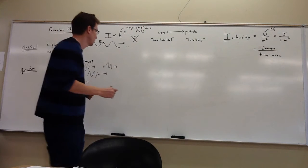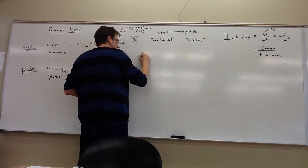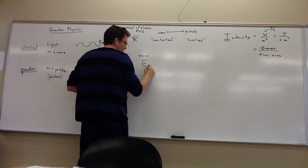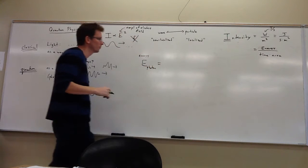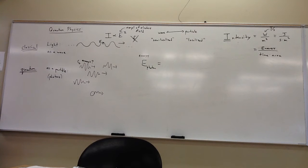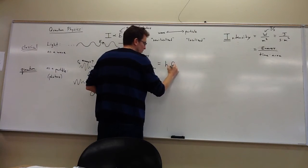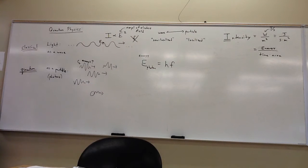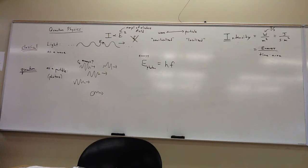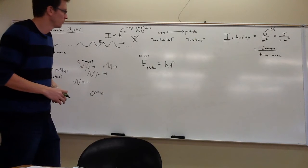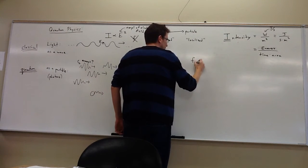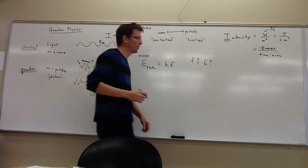I'm going to give you the formula. The energy of one photon depends on just what the frequency of the light is — it's the frequency of the light times a constant h. The frequency of the light will solely determine how much energy is in one of these little packets. So higher frequency light means the energy of one photon is larger.